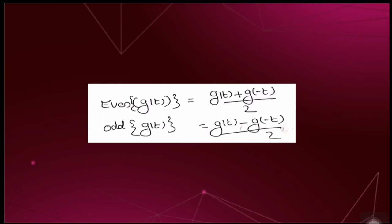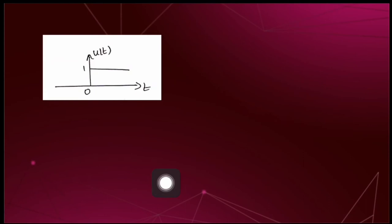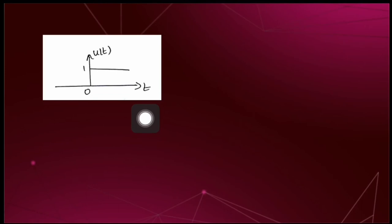Let's do that. This is our unit step function u(t) — it has a constant value of 1 from t = 0 to infinity, and is 0 for t less than 0. When we perform time reversal on u(t), we get u(−t), which can be obtained by folding the signal u(t) about t = 0.